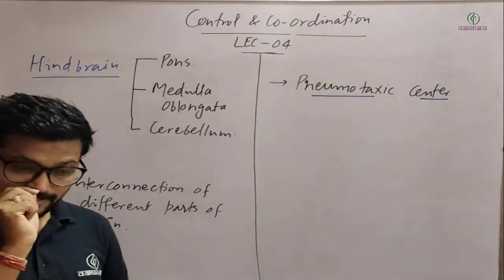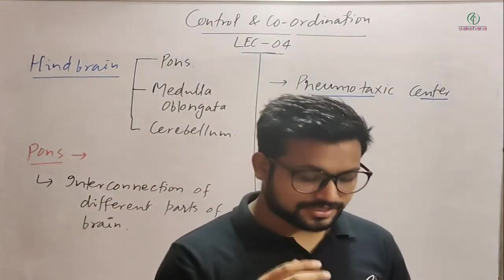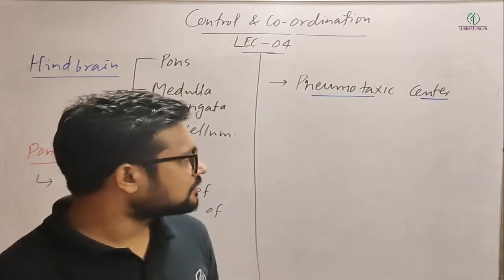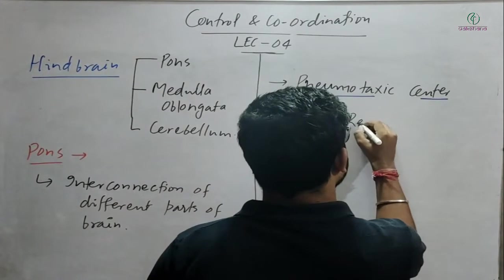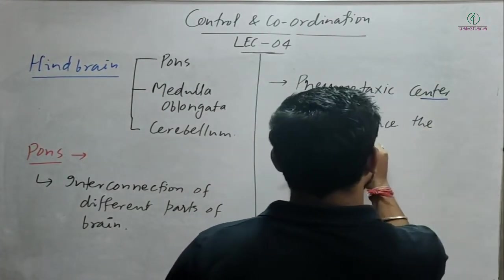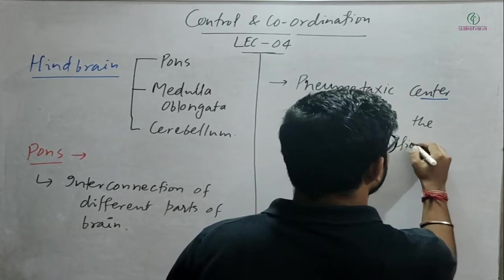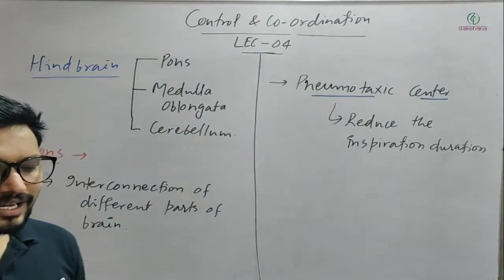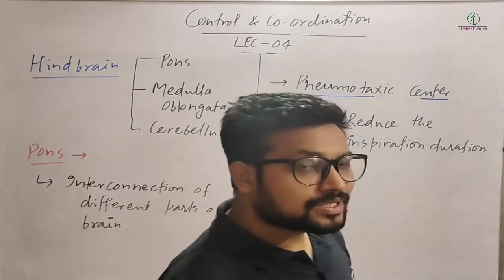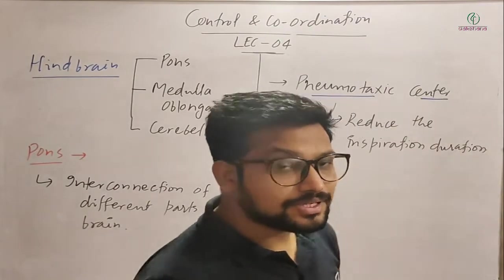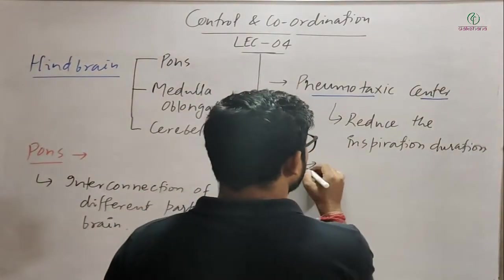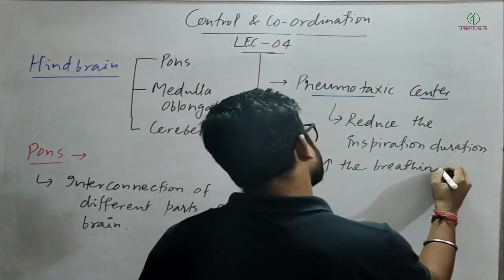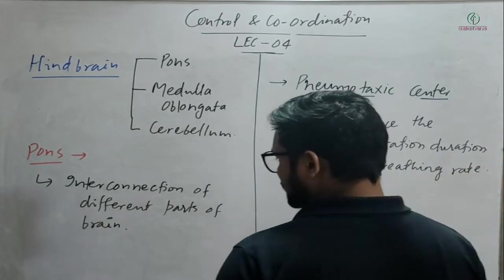The pneumotaxic center reduces the duration of inspiration. You know about inspiration and expiration. So this pneumotaxic center reduces the inspiration duration, and as a result, it increases the breathing rate.